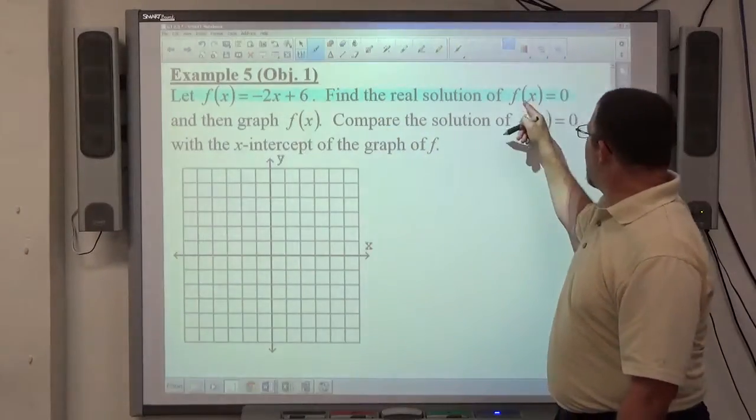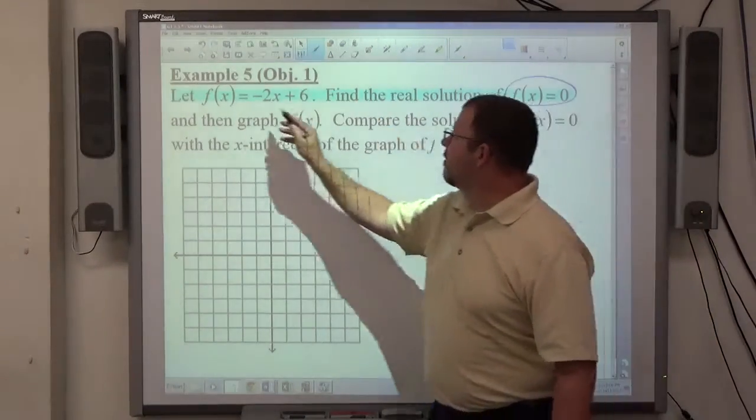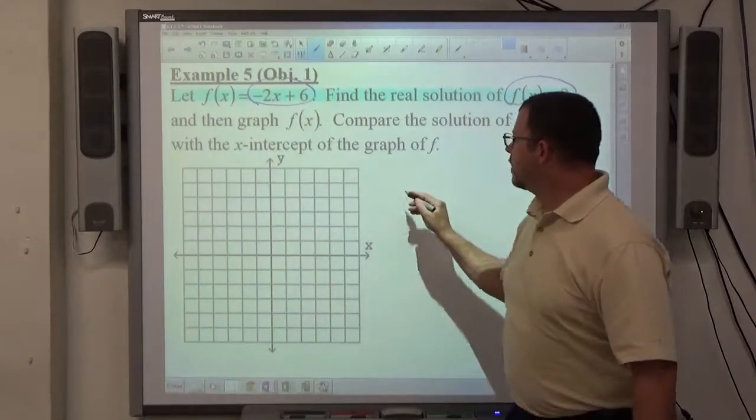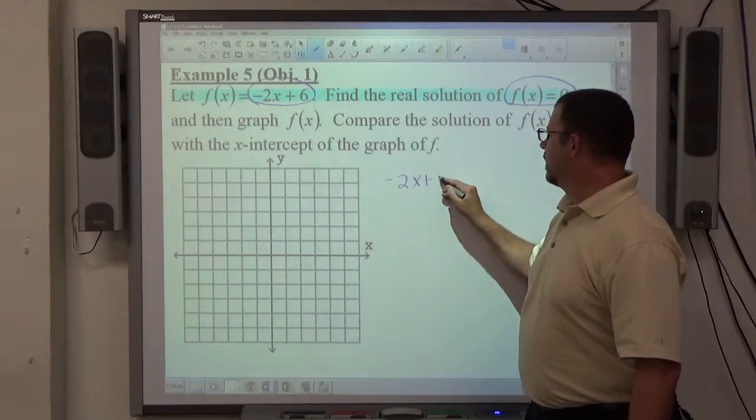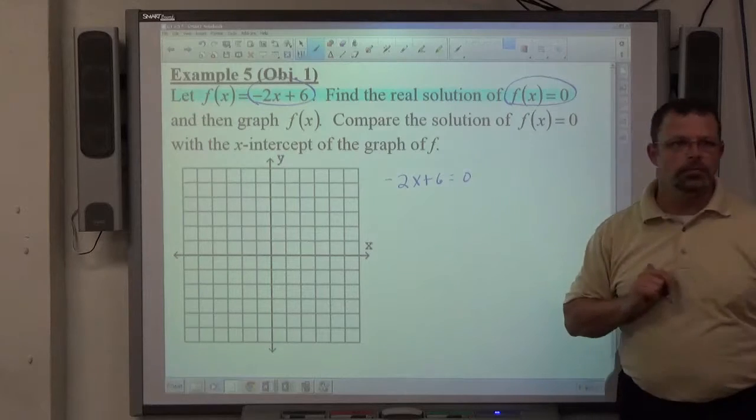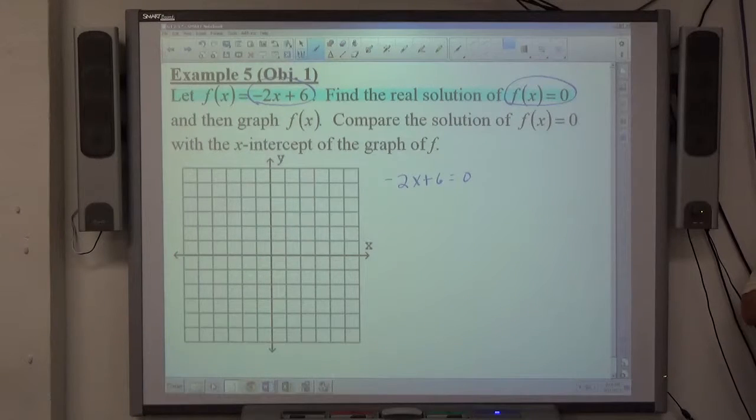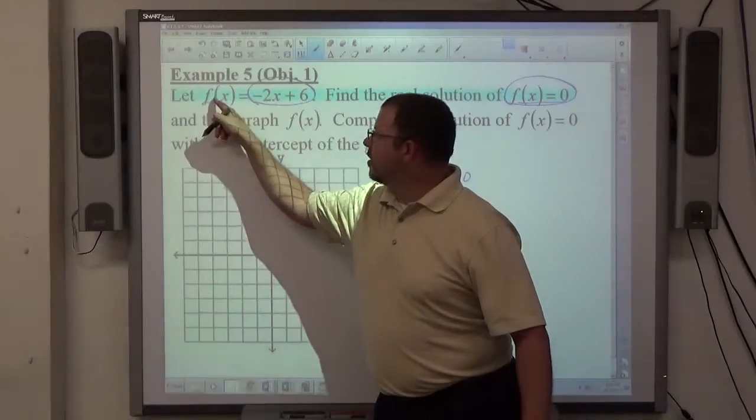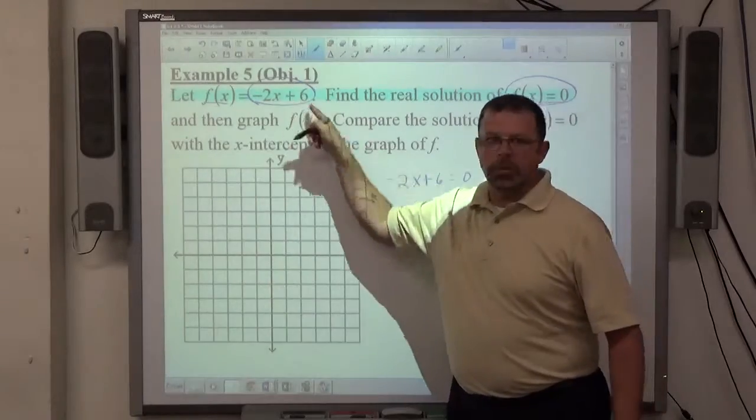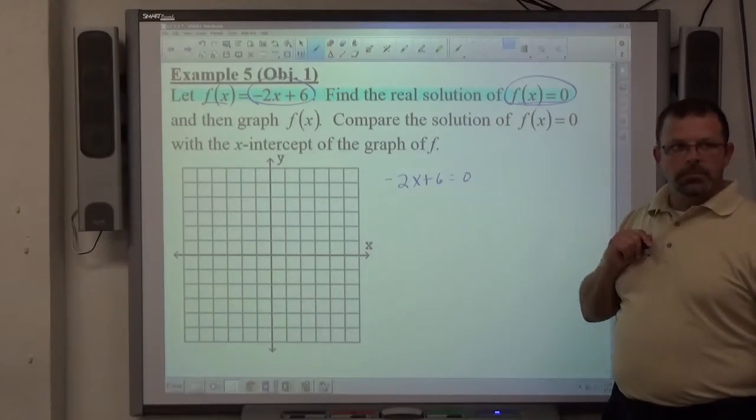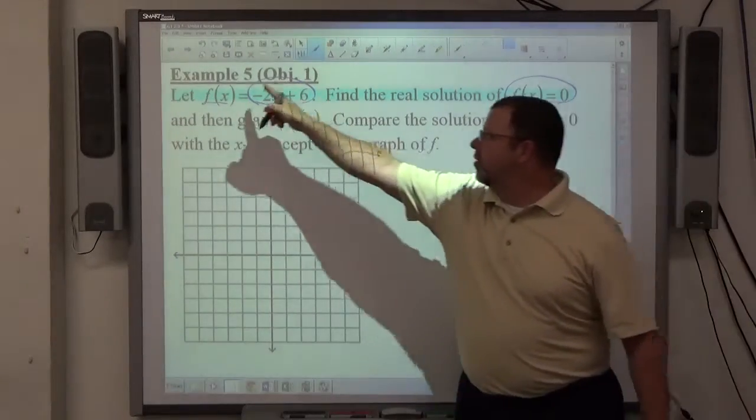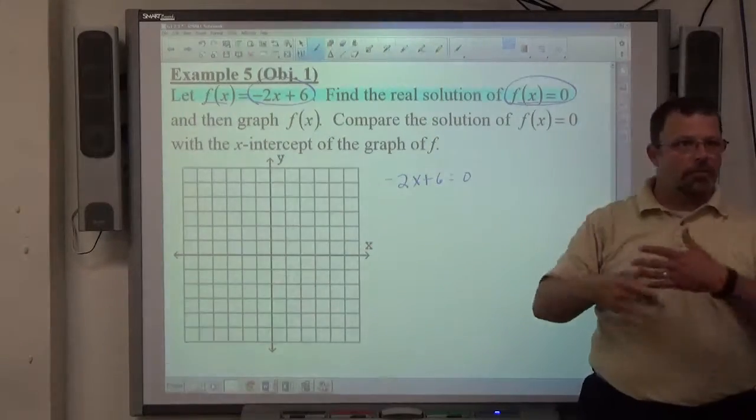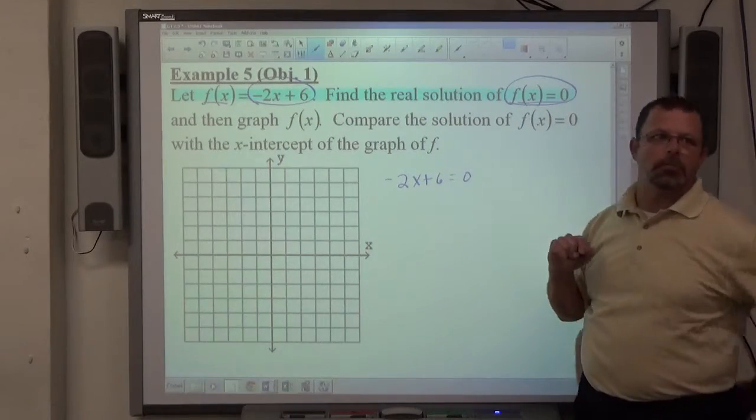So all I've got to do if f of x is supposed to equal 0 and f of x equals this expression, is set that expression equal to 0. Because again it says f of x equals 0, there's f of x set it equal to 0 equals the expression. So if that said 2, this would say 2 equals that expression. So whatever f of x equals, you let the function f of x equal that number.